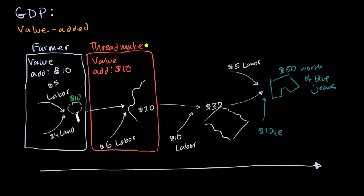And then from there, it goes to the fabric maker. The fabric maker, and I think you see where this is going, is this part of our process. And their value add is what? Pause this video and think about it. Well, they take something worth $20 and they're able to turn it into something that has a market value of $30. So their value add is also $10.